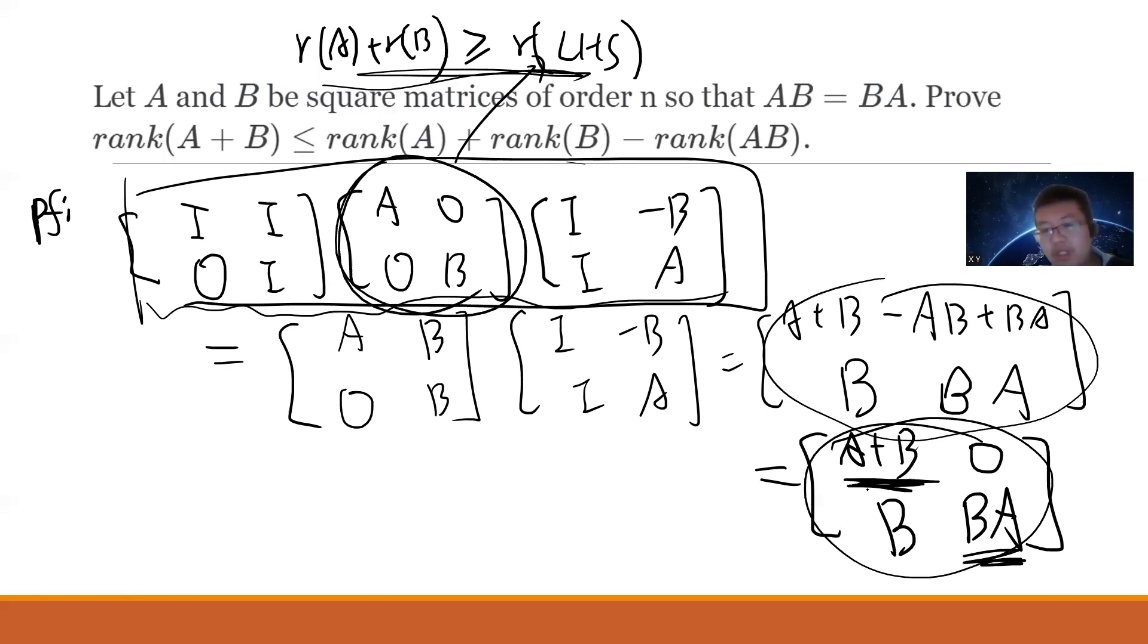right, because these are diagonal, right, so obviously that these matrices rank A plus B and the BA, so you can see that this, this is exactly as rank of the, these matrices, let's call it RHS, and that is exactly the rank,